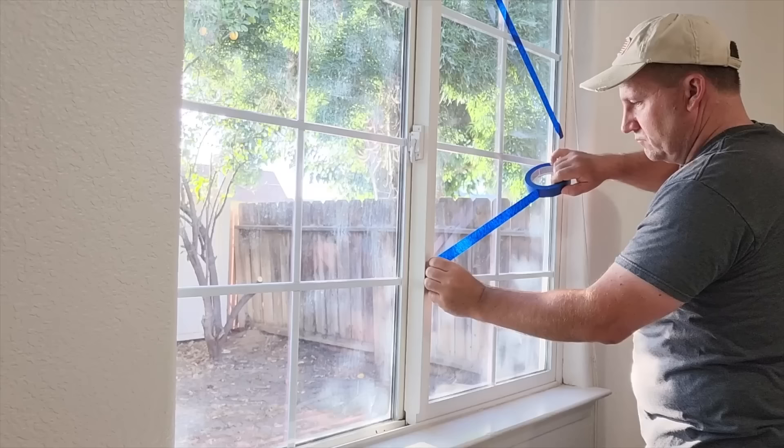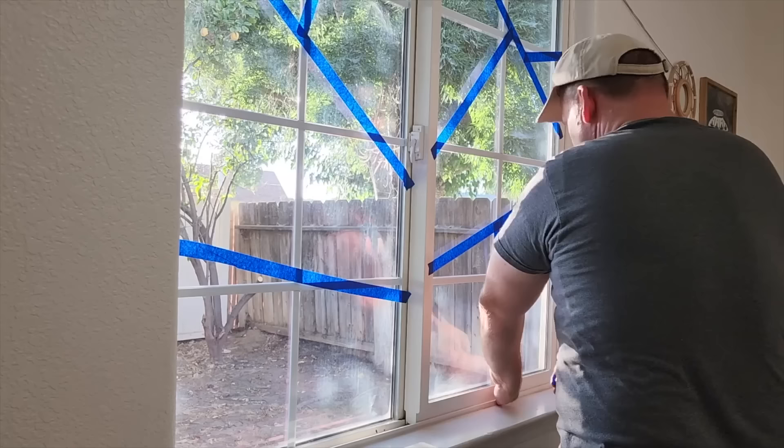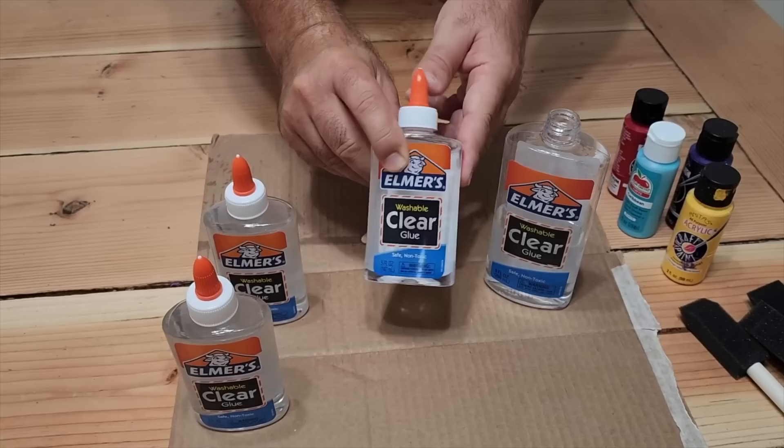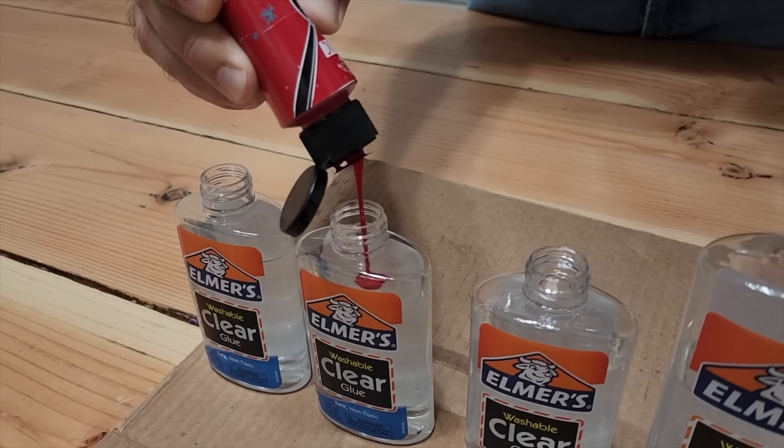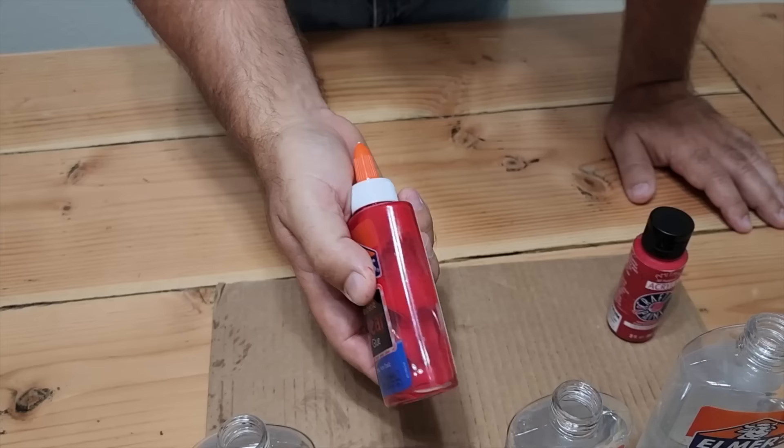You can take the tape and mask it to the grid that's already on the window, or you can just go random like I'm doing. The next step is to grab that Elmer's glue. Once we get some paint in there, all you got to do is just go back and forth with it and it shakes up really nice.